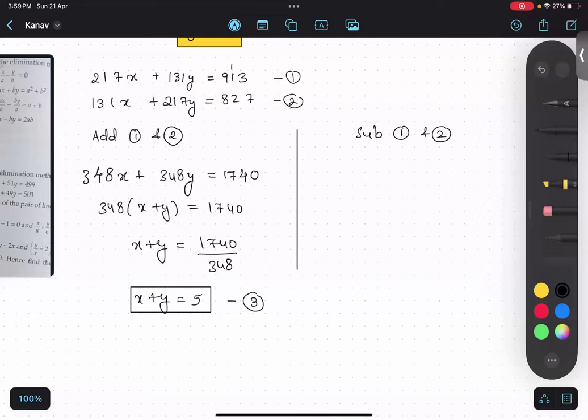So 217 subtracting 131, I will be getting 86. And similarly over here, this time I will be getting minus 86, minus 86, because 131 minus 217.